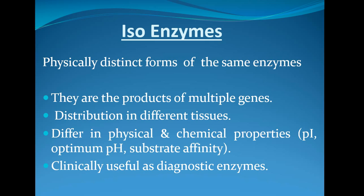Isoenzymes are physically distinct forms of the same enzyme, products of multiple genes, and they are distributed in different tissues all over the body — not located in any one particular tissue. They differ with respect to physical and chemical properties like P.I. (isoelectric pH), optimum pH for their action, and substrate affinity.